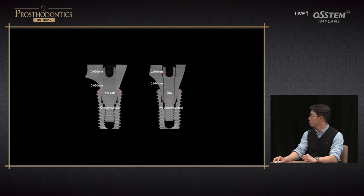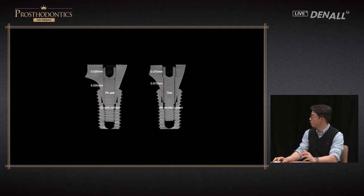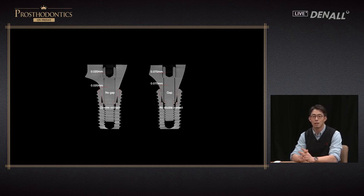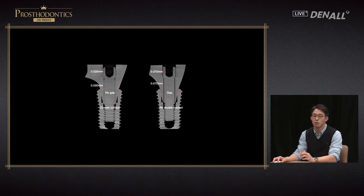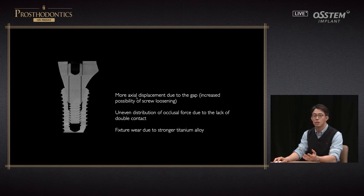A different custom titanium abutment from another lab should have double contact on both superior and inferior sides, but on the inferior side, you cannot really see it. In this case, stability of the connection area falls. There is also a larger micro-gap between the implant body and abutment. You cannot see or feel it tactilely, but if not extremely precise, with occlusal force, axial displacement can occur, leading to preload loss and screw loosening.